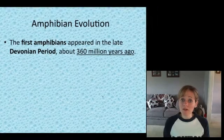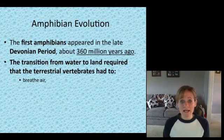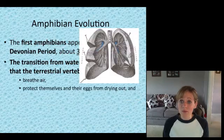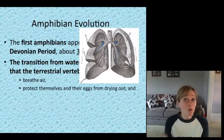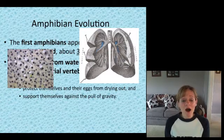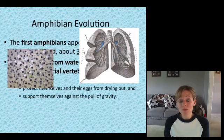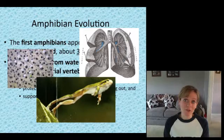Amphibian evolution appeared 360 million years ago. As they moved from water to land, they had to adapt to their changing environment. They had to figure out how to breathe air, protect themselves and their eggs from drying out — there's no more water as an adult — and support themselves against the pull of gravity since they're no longer fully surrounded by water. They developed structural adaptations such as limbs.